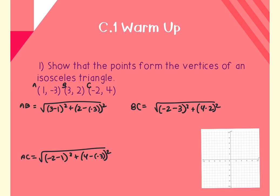In C1, we talked about using distance to find the length of the sides and then using that to classify the triangle. Number one says show that the points form the vertices of an isosceles triangle. On your quiz, it will say find the length of all three sides — that's your distance formula part — and then it will ask you to classify it as equilateral, isosceles, right, or none of them.